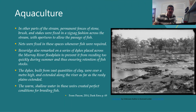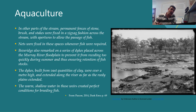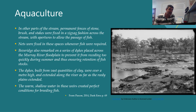Another important area where we find management of resources by the First Nations people is in the area of aquaculture. This is a small extract from Bruce Pascoe's book Dark Emu, which talks about the sophisticated agriculture and aquaculture practices of First Nations people. In one section, there is a quote from a settler called Beveridge, recording observations of Aboriginal sites: 'In other parts of the stream, permanent fences of stone, brush and stakes were fixed in a zigzag fashion across the stream, with apertures to allow the passage of fish. Nets were fixed in these spaces whenever fish were required.' Beveridge also remarked on a series of dikes placed across the Murray River floodplain to prevent it from receding too quickly during summer, thus ensuring retention of fish stocks.